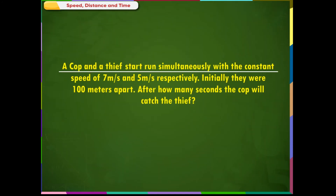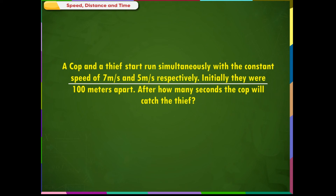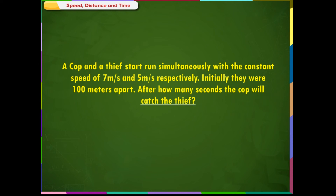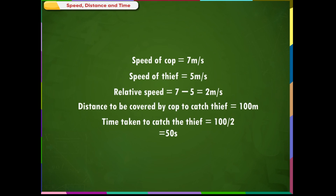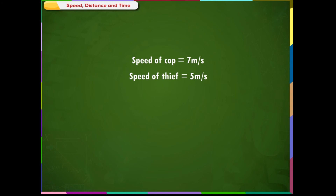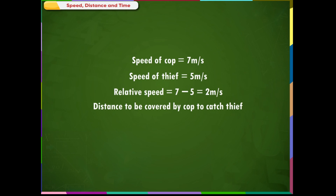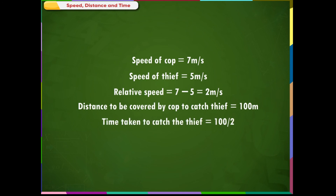Example 1: A cop and a thief start running simultaneously with constant speeds of 7 m per second and 5 m per second respectively. Initially they were 100 m apart. After how many seconds will the cop catch the thief? Speed of cop = 7 m/s; Speed of thief = 5 m/s. They run in the same direction, so relative speed = 7 minus 5 = 2 m per second. Distance to be covered = 100 m. Time taken = 100 divided by 2 = 50 seconds.